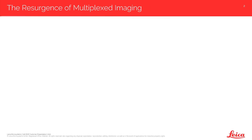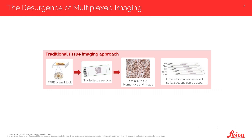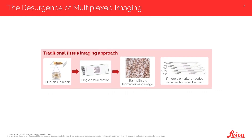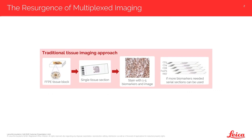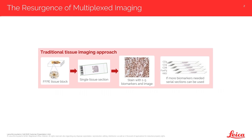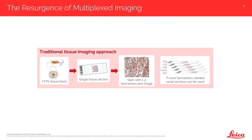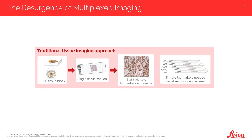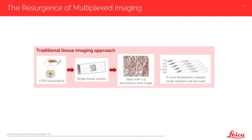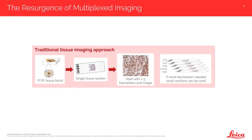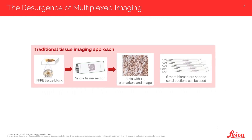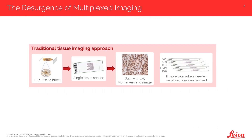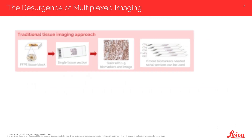So first, what is multiplex imaging and what can it do for researchers? It's probably easier to start with explaining what traditional imaging is for human tissues. In the past, single tissue sections might be stained chromogenically for up to five markers, and if additional markers were of interest, serial sections might be used. But getting good spatial resolution for a lot of markers is a challenge with this technique.